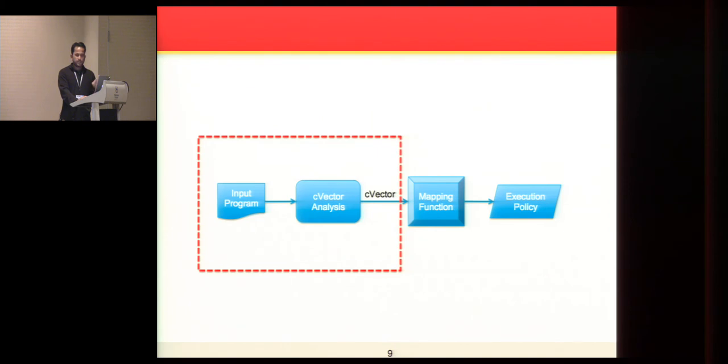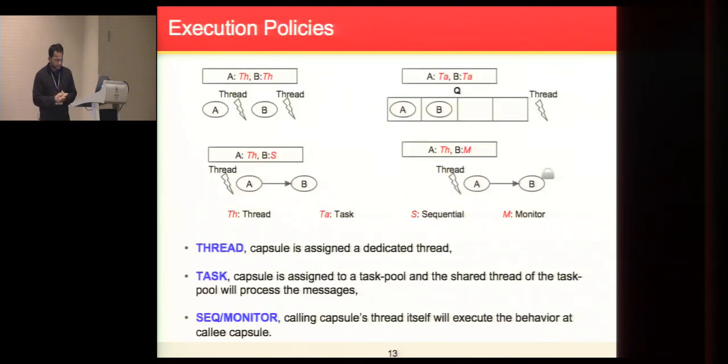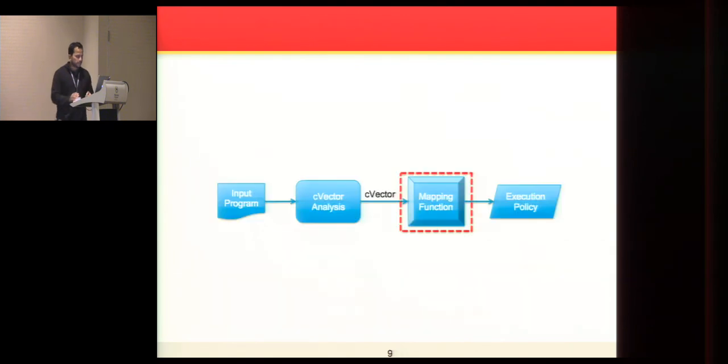I have defined how we represent and compute the behavior. Let's look at a few of the execution policies that can be assigned. In this work, we looked at four different execution policies: thread, task, sequential, and monitor. In case of thread policy, every capsule or concurrent entity will be assigned a dedicated thread. That thread will process all the messages from that capsule. In case of task, it is assigned to a task pool where a shared thread will execute the messages. In case of sequential and monitor, the thread that is calling the procedure itself will execute the behavior. You can see here that by assigning different execution policies, we achieve different abstraction or capsules to thread mapping. We have now defined execution policy.